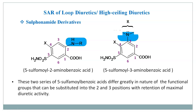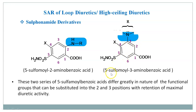These two series of 5-sulphonamide benzoic acid differ greatly in the nature of the functional group that can be substituted at the second position or third position with retention of maximum diuretic activity. If the amino group is present at the second position, the chemical class is 5-sulphonamide 2-amino benzoic acid, whereas if present at the third position, the class is 5-sulphonamide 3-amino benzoic acid.